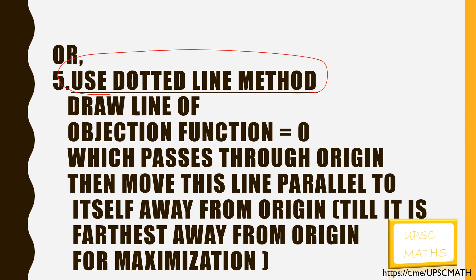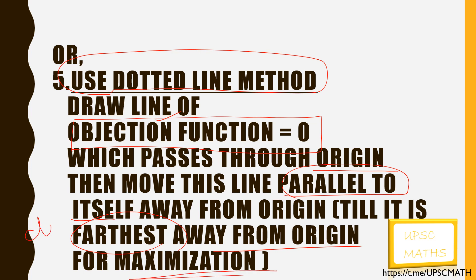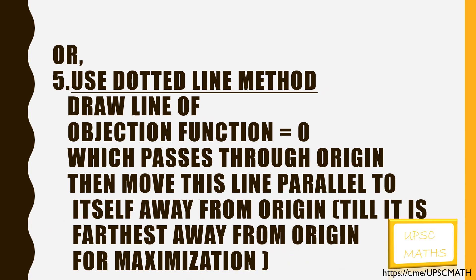Alternatively, you can use the dotted line method, in which we draw a line considering the objective function as 0, which passes through the origin. Then move this line parallel to itself away from the origin until it is farthest from the origin for a maximization problem, and closest to the origin for a minimization problem. You will understand these steps easily after solving a sum.